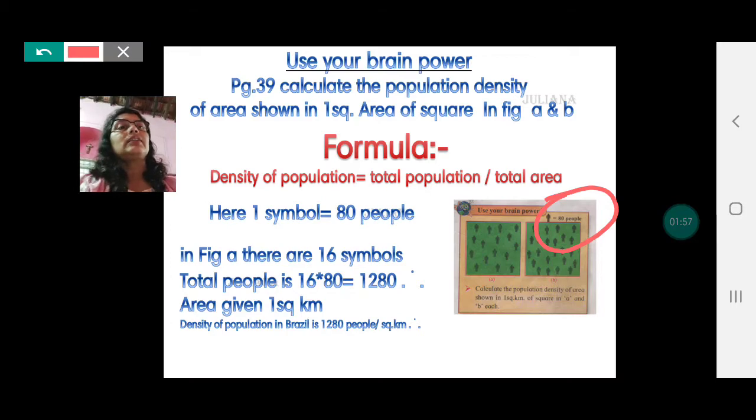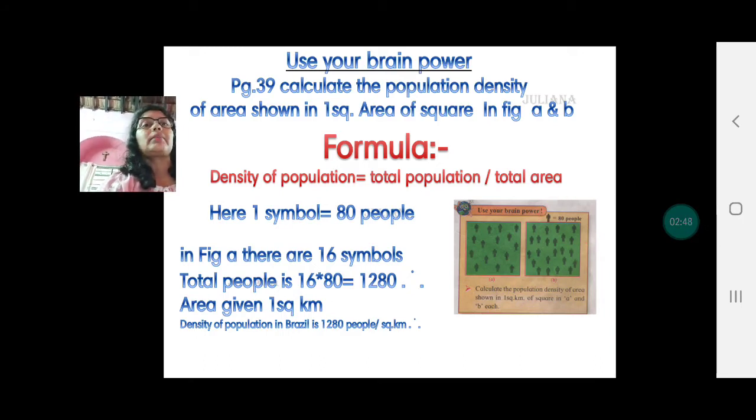So we have 1, 2, 3, 4 in the first row, 5, 6, 7, 8, 9, 10, 11, 12, 13, 14, 15 and 16. So you see basically there are 4, 4, 4, 4, so 16 people symbols are there. One symbol is 80 people. So 16 symbols means 16 into 80, that makes it 1280 people. Total population 1280 divided by total area 1. So our answer is 1280 people per square kilometer area.